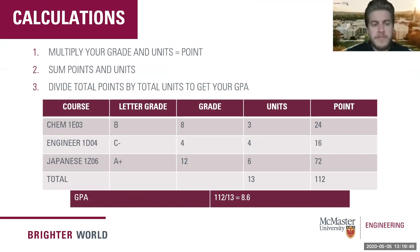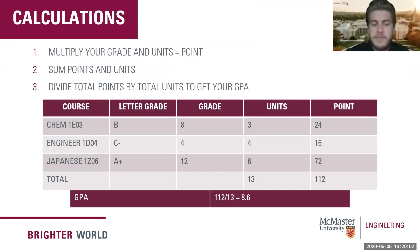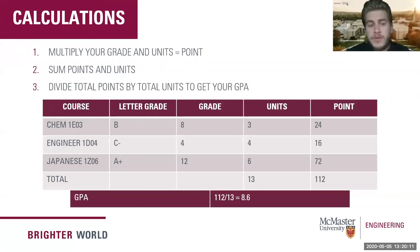For example, Chem 1E03 has a B. Take that letter grade and convert it using the equivalent grade point chart — a B is an 8, a C− is a 4, and an A+ is a 12. In the next column, indicate the units per course: Chem 1E03 is 3 units, Engineer 1D04 is 4 units, and Japanese 1Z06 is 6 units.